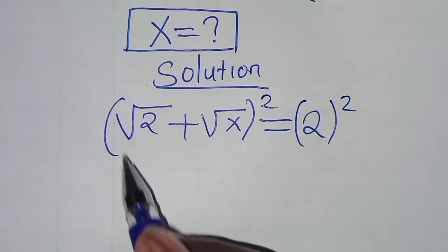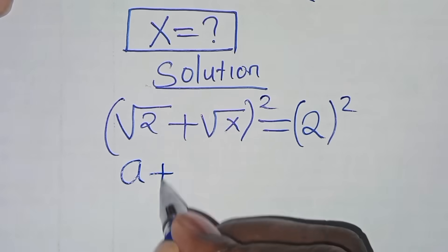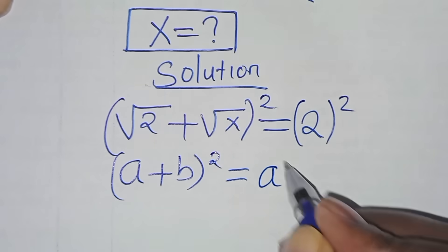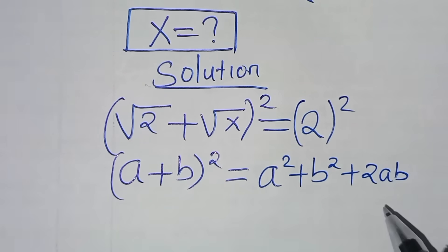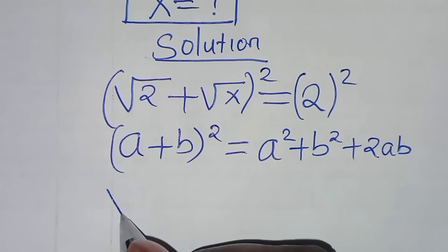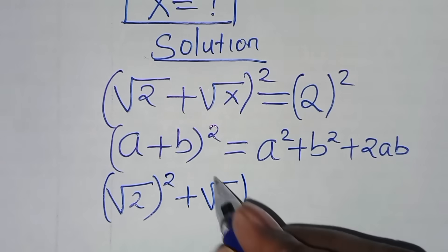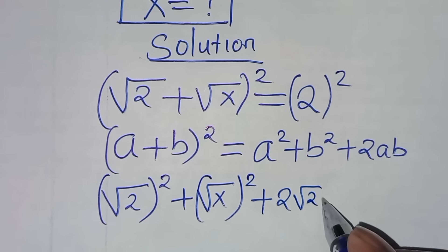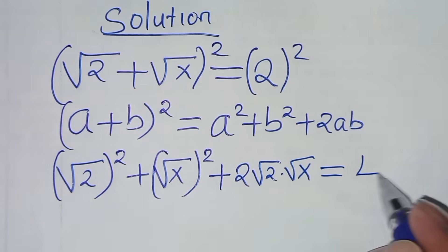We find that the square root of 2 plus square root of x, squared, is in the form of a plus b squared, which we can express as a squared plus b squared plus 2ab. Applying this algebraic identity, we have square root of 2 squared plus square root of x squared, plus 2 times square root of 2 times square root of x, equal to 2 squared which is 4.